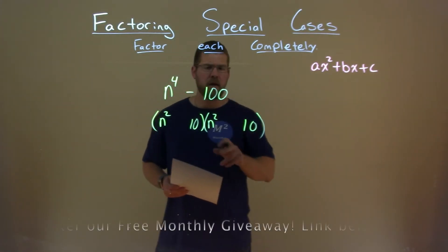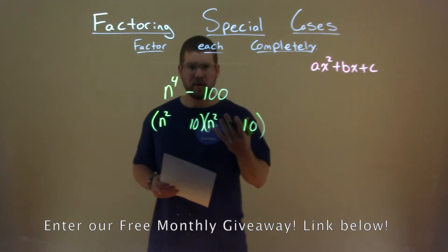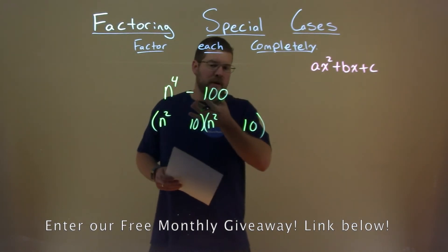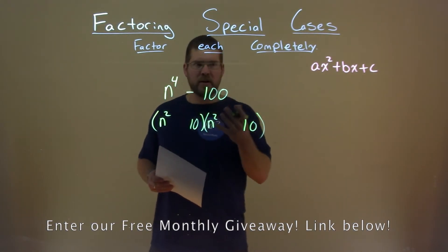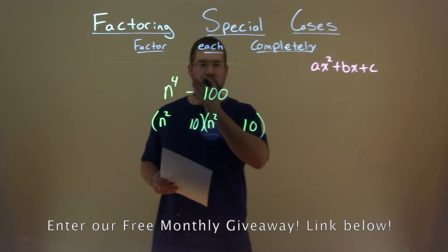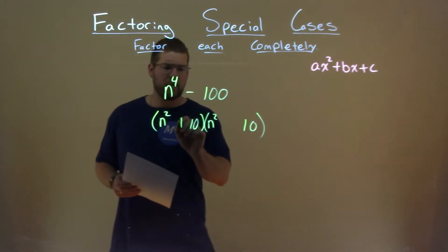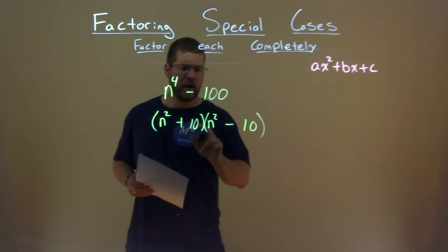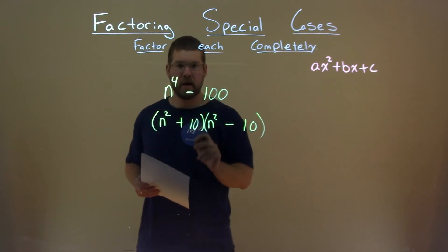Almost there. We do not have a b value right now. That b value is 0, so it's not written. So what's going to happen here? How do we make sure that when we multiply this out, we don't get a b value? And that's going to be a plus and minus. That helps us with 10 times negative 10, which is negative 100. Got it.